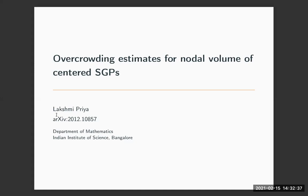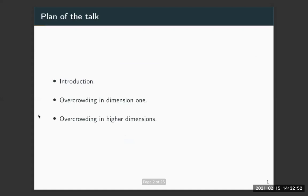Thank you very much for this wonderful opportunity. Good afternoon, everyone. I'll be talking about overcrowding estimates for nodal volume of centered stationary Gaussian processes. This is the plan of my talk. In the first part, I would like to introduce the problem and provide some heuristics — there won't be any rigorous discussion. In the second and third parts, I would like to show how to get overcrowding estimates in dimension one and in higher dimensions.